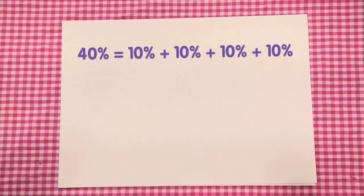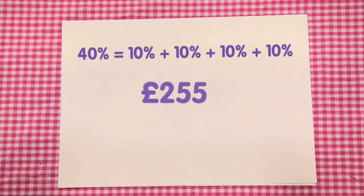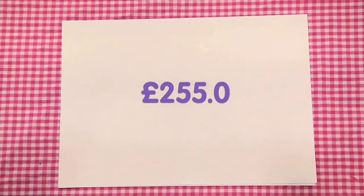You can use the decimal point method. We need to be aware that there is a decimal point that is not normally written when we have whole numbers. When we insert a decimal point, £255 becomes £255.0. When we divide by 10 to find 10%, we cannot just remove the 0 as there isn't one. We must instead move the decimal point one place to the left.